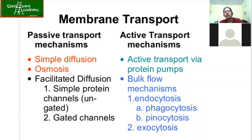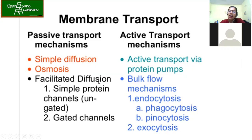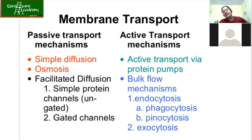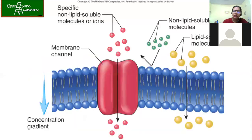Active transport mechanisms are ATP-driven. Under passive transport we have simple diffusion, osmosis, and facilitated diffusion. Facilitated diffusion is further divided into simple protein channels (ungated) and gated channels. We will study each one in detail because examples are very important for understanding these mechanisms.